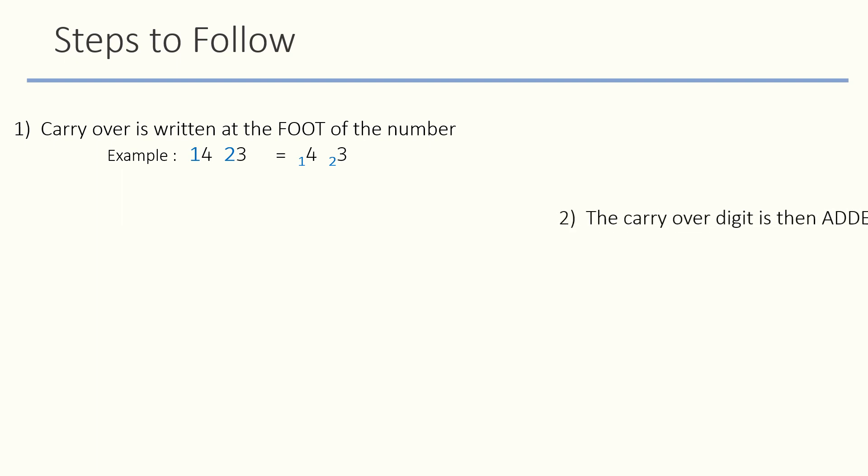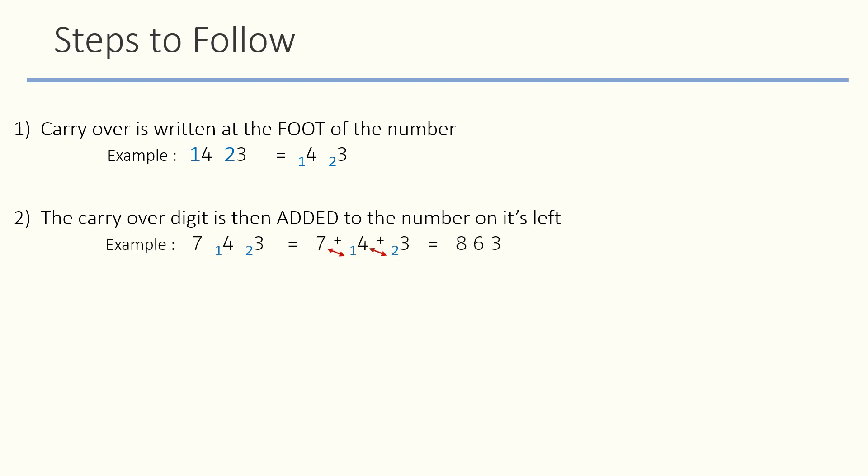Step 2: The carryover digit is then added to the number on its left. In this example, starting from right to left, we will add carryover 2 to the digit on its left which is 4. Next, we will add carryover 1 to the digit on its left which is 7.